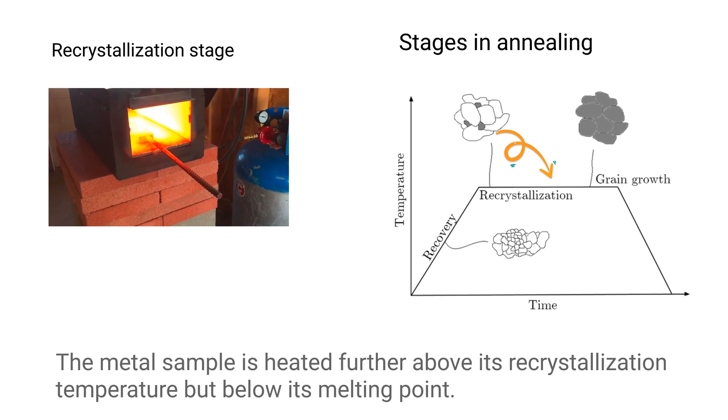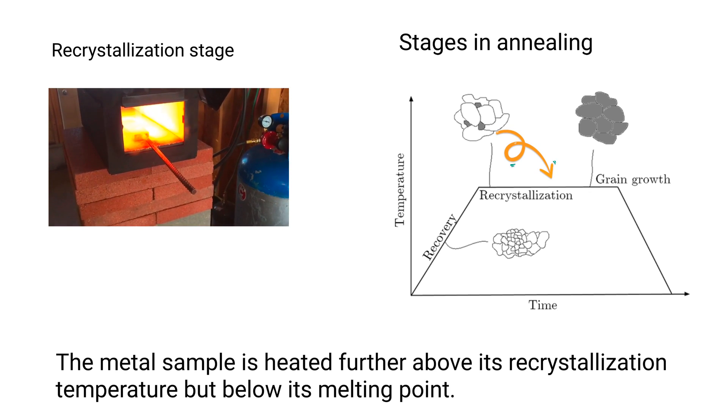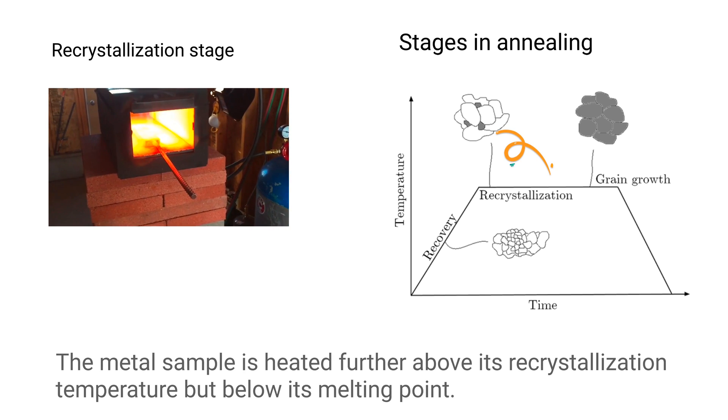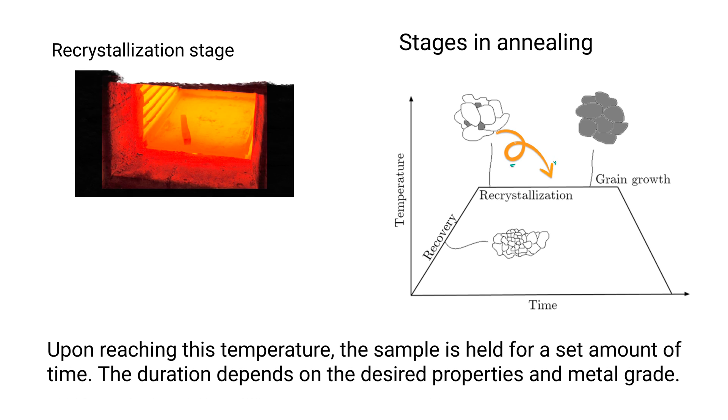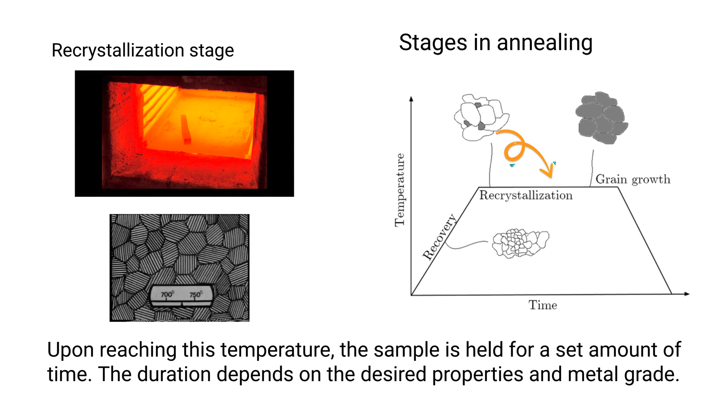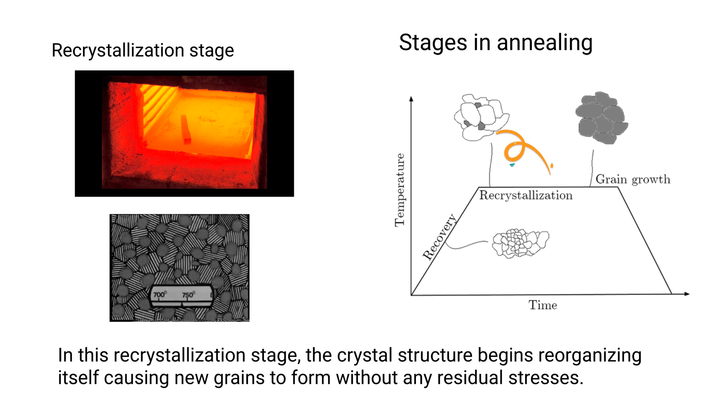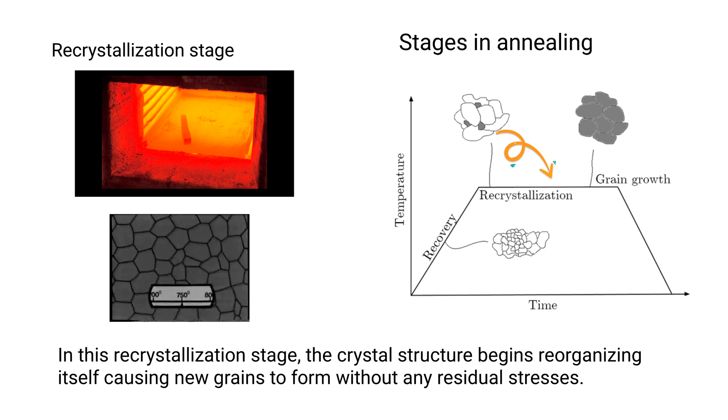Recrystallization stage. The metal sample is heated further above its recrystallization temperature but below its melting point. Upon reaching this temperature, the sample is held for a set amount of time. The duration depends on the desired properties and metal grade. In this recrystallization stage, the crystal structure begins reorganizing itself, causing new grains to form without any residual stresses.